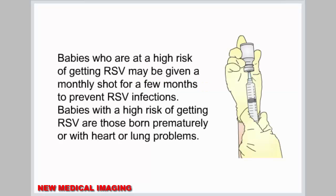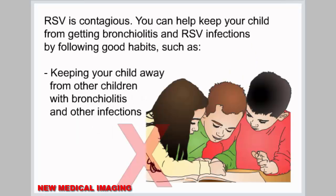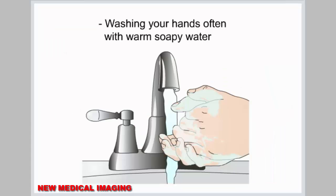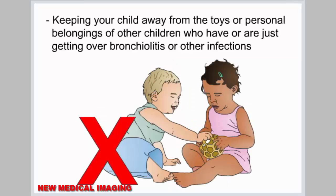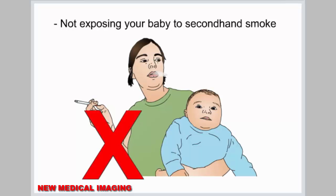Babies who are at high risk of getting RSV may be given a monthly shot for a few months to prevent RSV infections. Babies at high risk are those born prematurely or with heart or lung problems. You can help keep your child from getting bronchiolitis and RSV by keeping your child away from other children with bronchiolitis, washing your hands often with warm soapy water, keeping your child away from the toys or personal belongings of other infected children, and not exposing your baby to secondhand smoke.